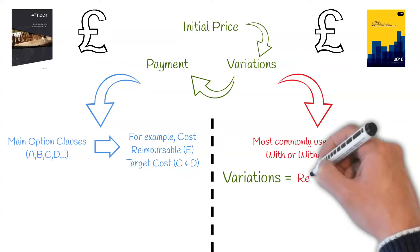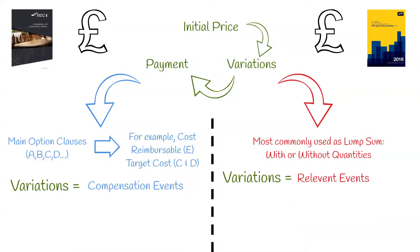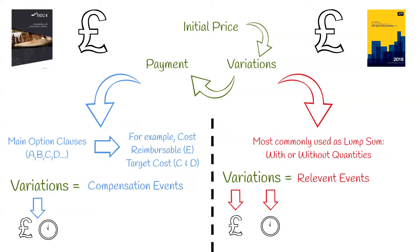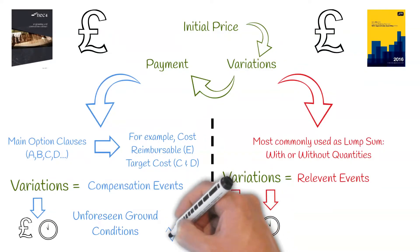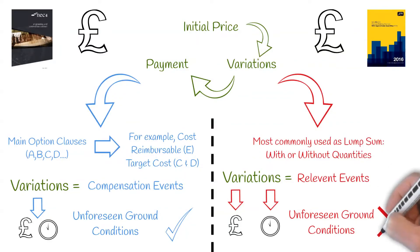Variations under JCT are known as relevant events, and under NEC they are known as compensation events. JCT deals with time and price variations separately, therefore an extension of time does not automatically guarantee a price adjustment, unlike the NEC where both time and cost are grouped together under the compensation event. For example, unforeseen ground conditions which an experienced contractor could not have foreseen is a valid reason for a variation under NEC; however, this risk is carried by the contractor under JCT.